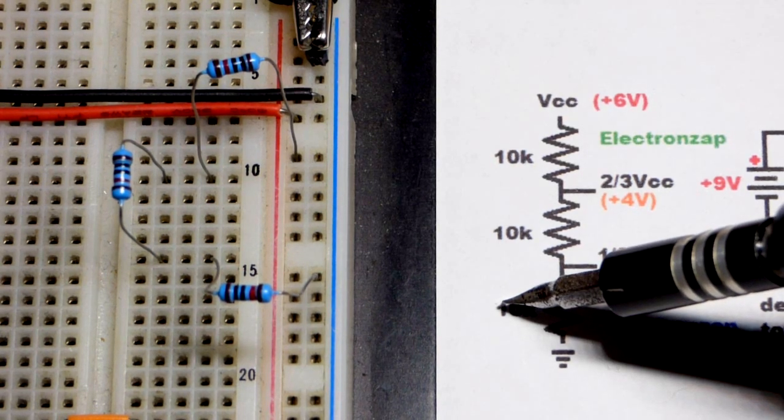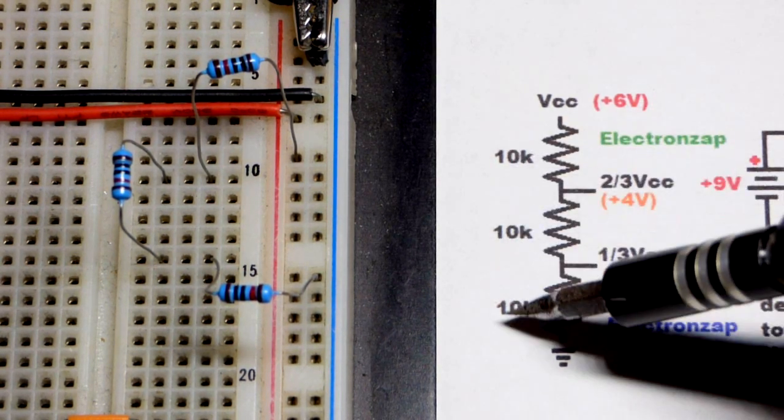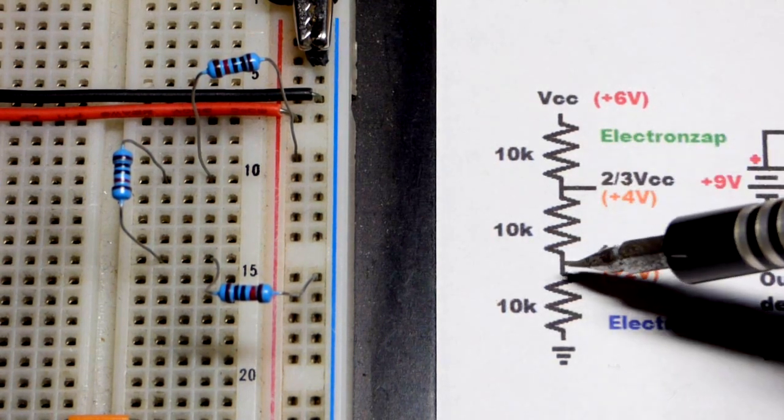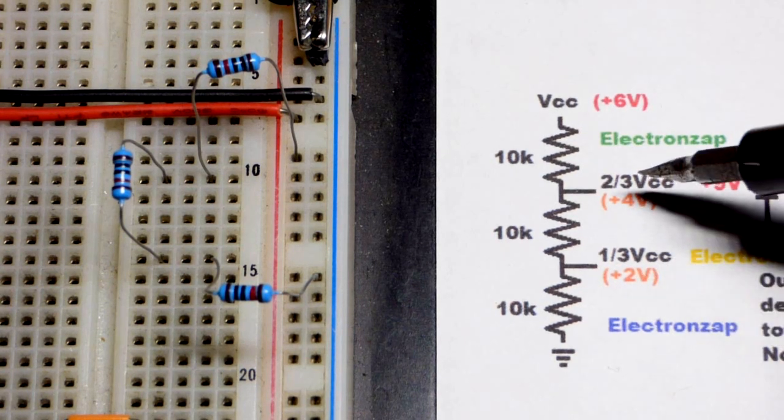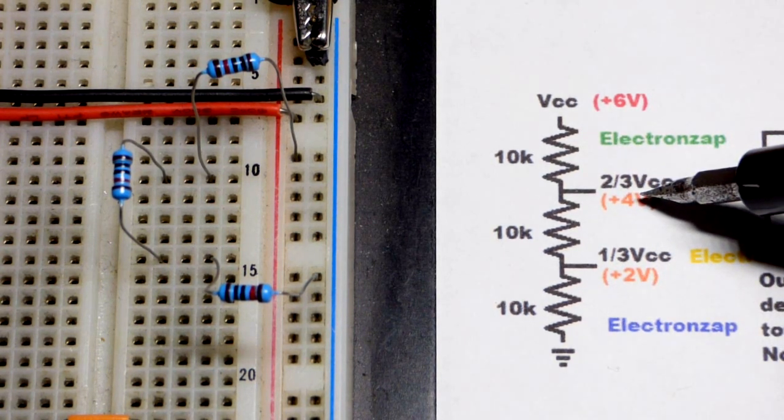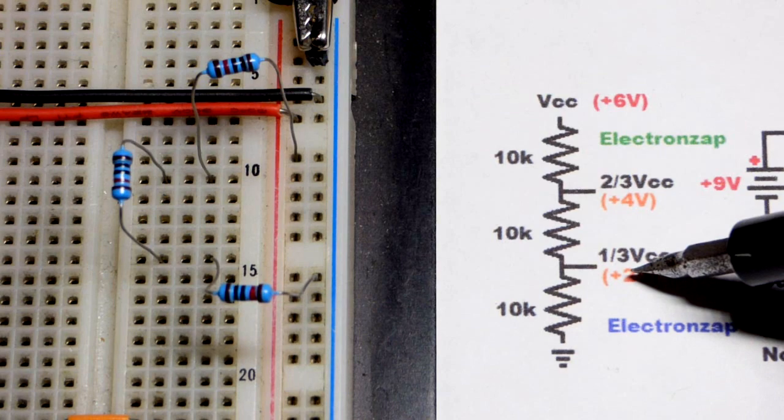The more current you need, the lower the value of the resistors. Ultimately you don't want to provide current with this voltage, you just want to provide a voltage signal. Other circuitry will look at this voltage and respond to it in some way.